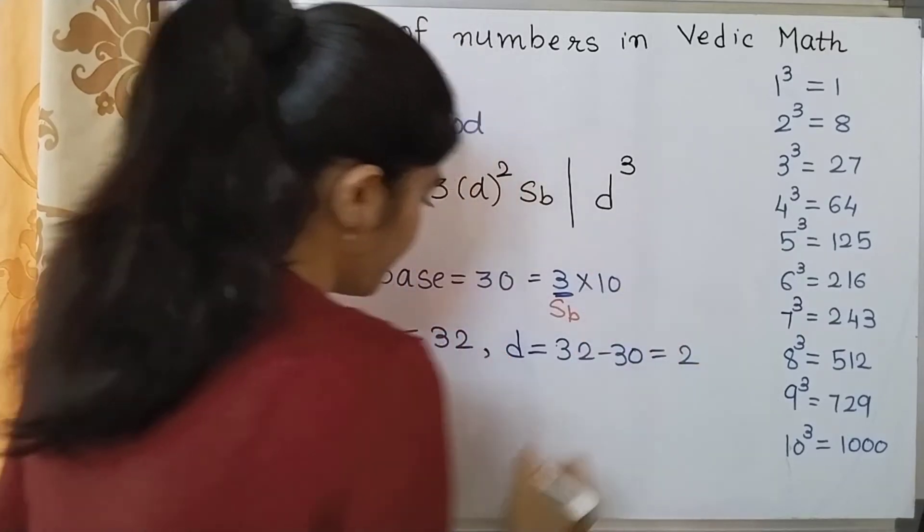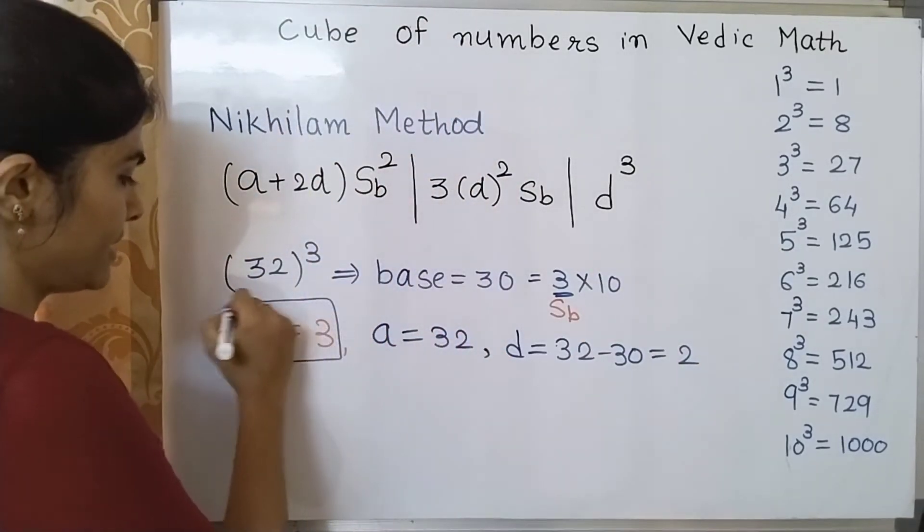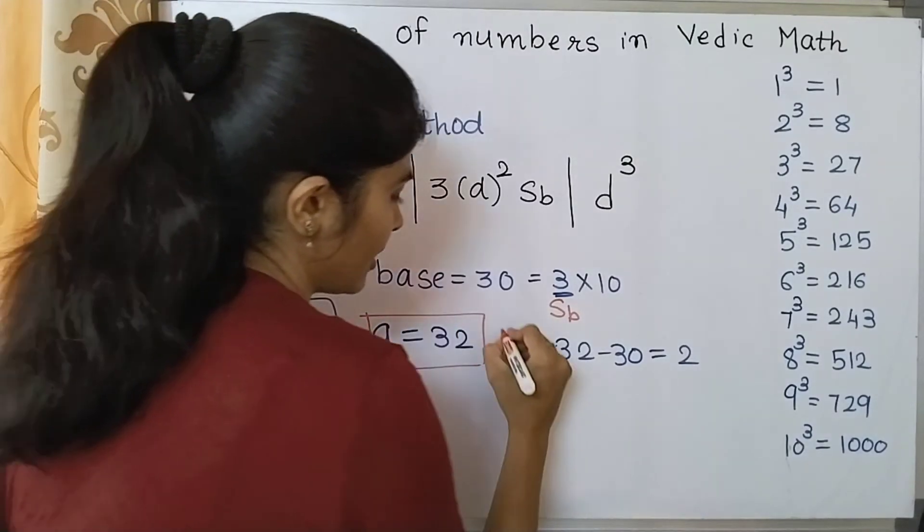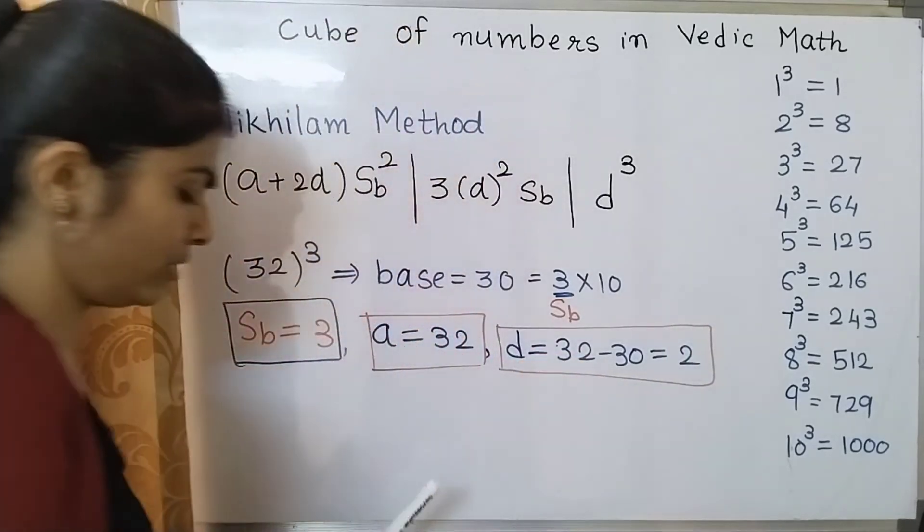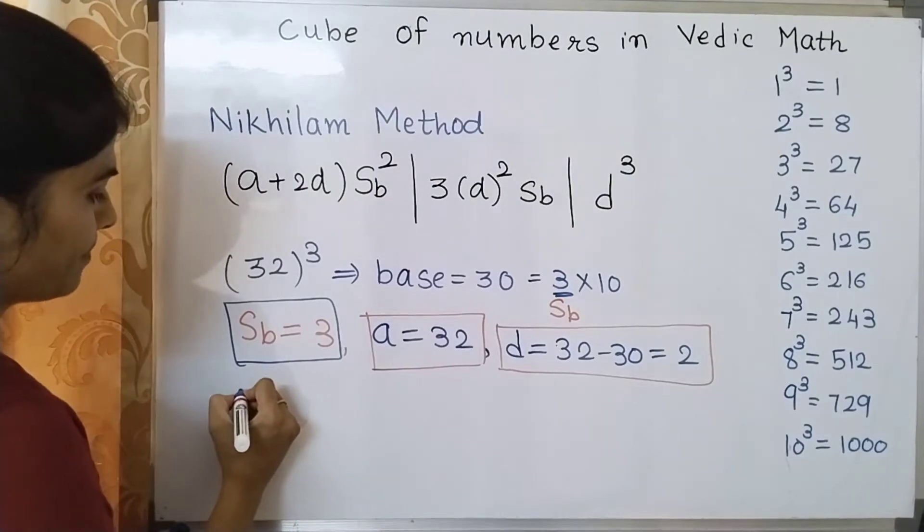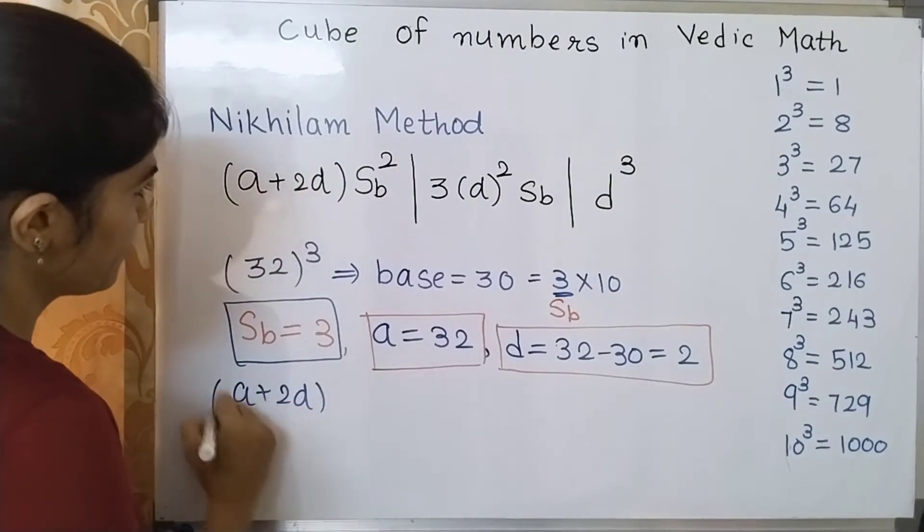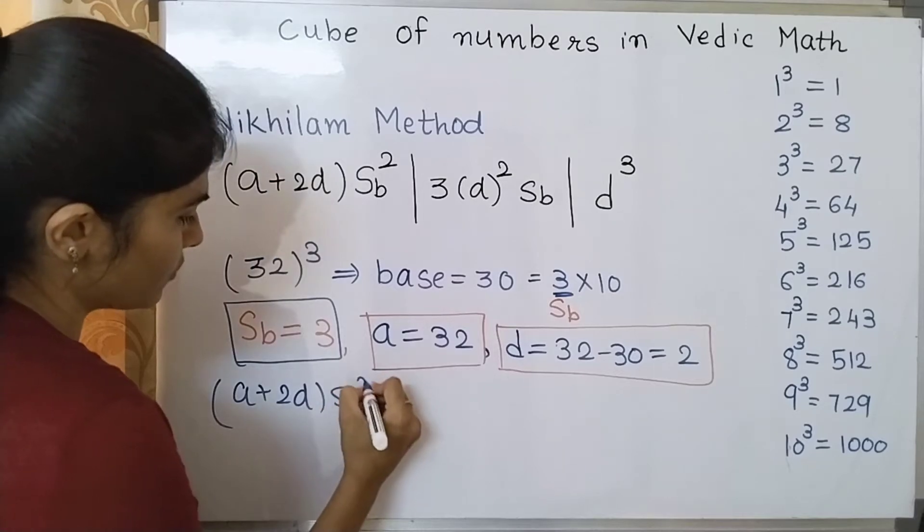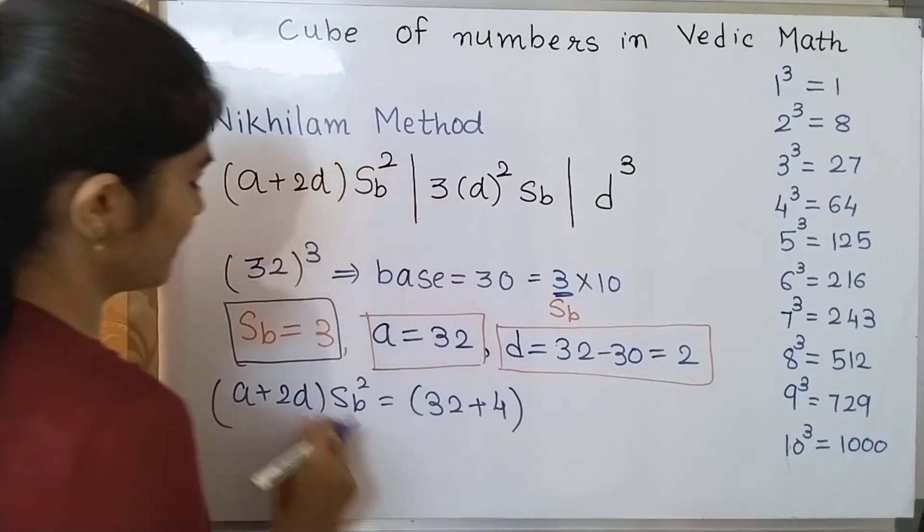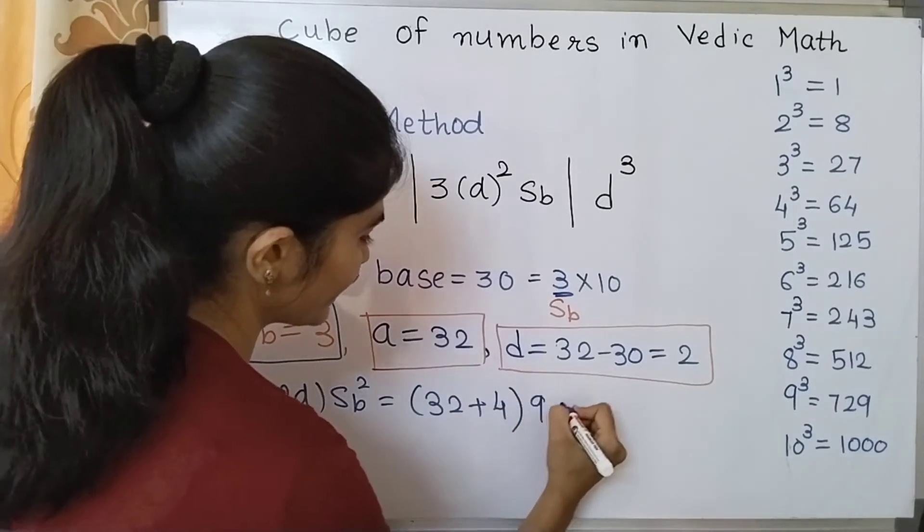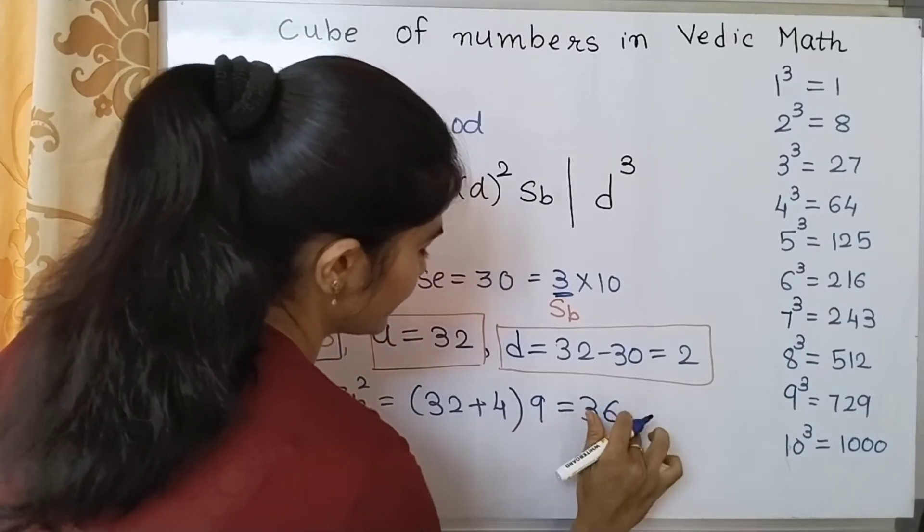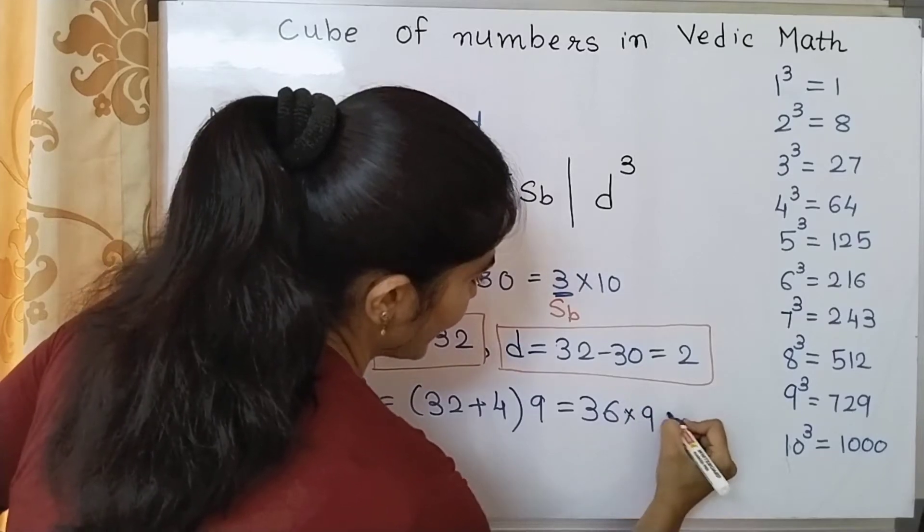And I can say that now what do I need to find? I need to find out difference or you can say deviation which is 32 minus 30, so its value is 2. So you are having sub base, you are also having value of a and you are also having value of b which is 2. Now we need to substitute these values. So how much is my a plus 2 times b? So my a is 32, 32 plus 2 times 2 which is 4, and sub base square, sub base is 3 square is 9. So I can say that 32 plus 4 which is 36 and 36 times 9.